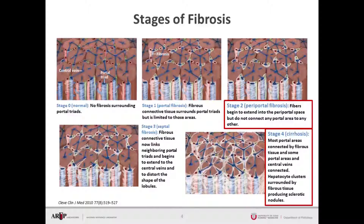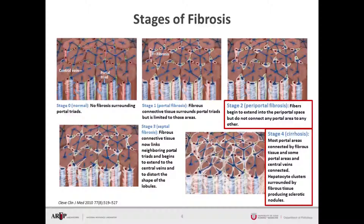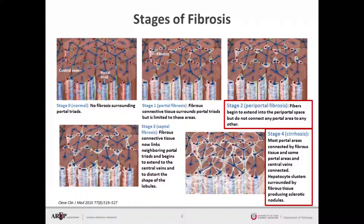Stage four, which is the end-stage disease and most severe form of fibrosis, sees most portal areas connected by fibrous tissue. Some portal areas and central veins are also connected. Hepatocyte clusters surrounded by fibrous tissues produce sclerotic nodules affecting liver function, and these patients develop severe complications — including risks for ascites, hepatocellular carcinoma, and issues with coagulation. Stages two and four are particularly important clinically because they represent points at which treatment or intervention is recommended.